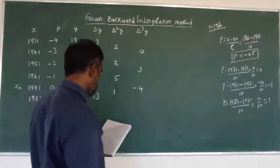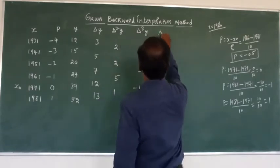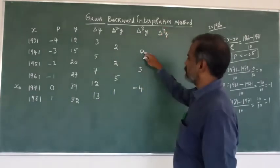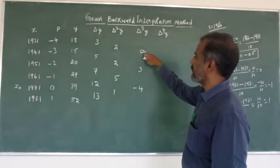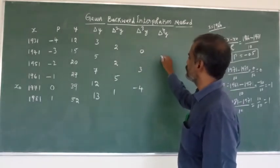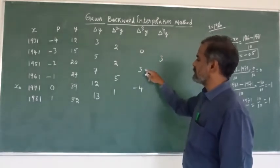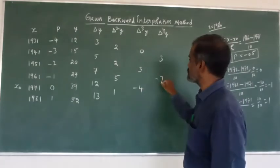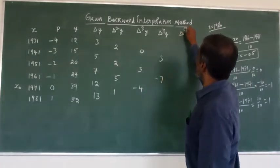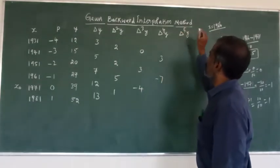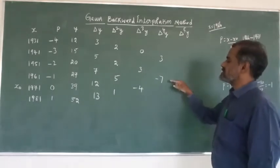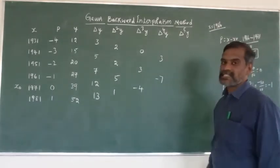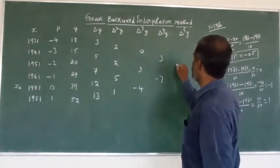For delta power 4: 3 − 0 = 3; −4 − 3 = −7. For delta power 5: the difference between −7 and −3 gives minus 10.